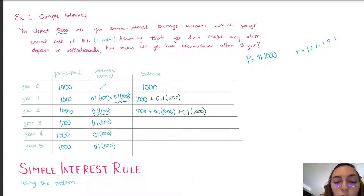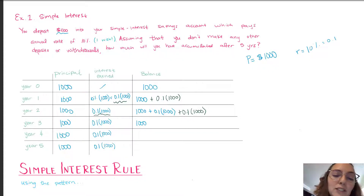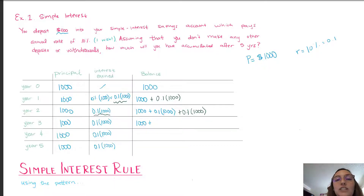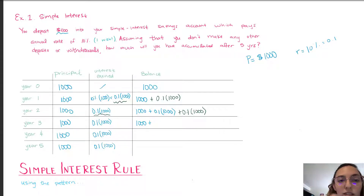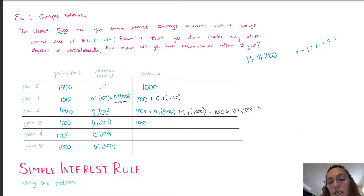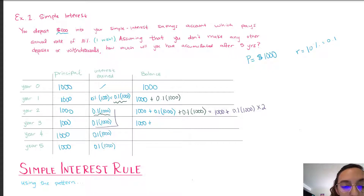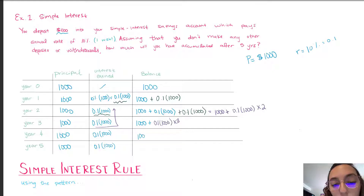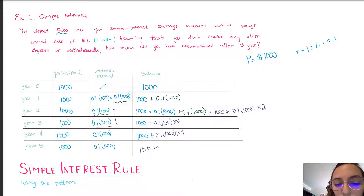Are you starting to see a pattern? For year 3 we're going to have our previous balance. Now let's use some Mathematizing Module techniques for finding patterns. Instead of repeatedly adding the same term over and over, when we have repeated addition that's the same as multiplication. So in year 2 we see that we're adding the same term — 0.1 times 1,000 — twice. We can simplify this expression to show that term is being repeated twice. By year 3 we're repeating the interest earned three times; year 4, four times; and by the end of the fifth year, five times.